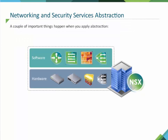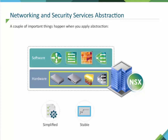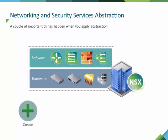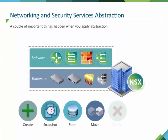A couple of important things happen when you apply abstraction. The underlying physical network now becomes simplified, more stable, and more reliable because it no longer needs to be changed or reconfigured as part of the service delivery process. IT can now achieve the operational model of a virtual machine for the entire data center — meaning it is now possible to programmatically create, snapshot, store, move, delete, and restore entire application environments with the same simplicity and speed that you use to spin up a virtual machine.